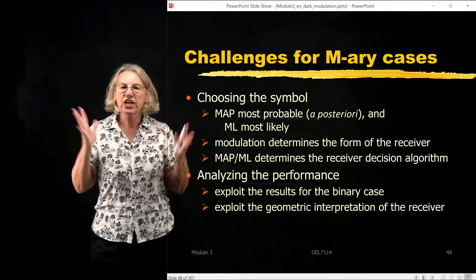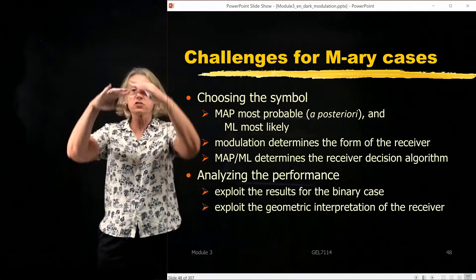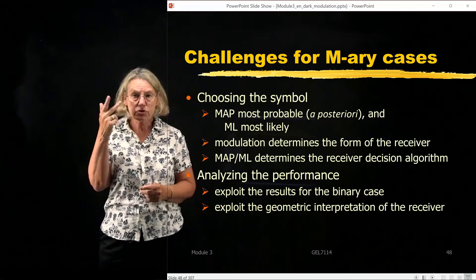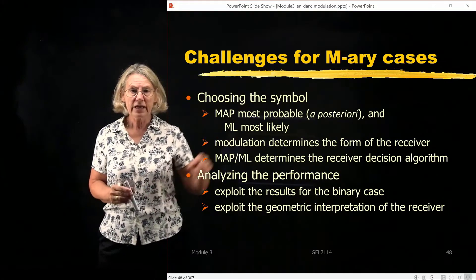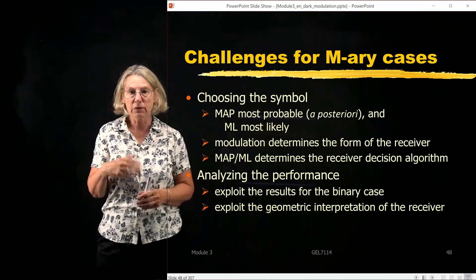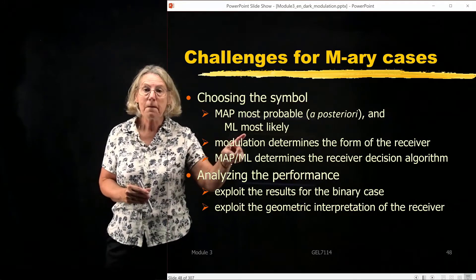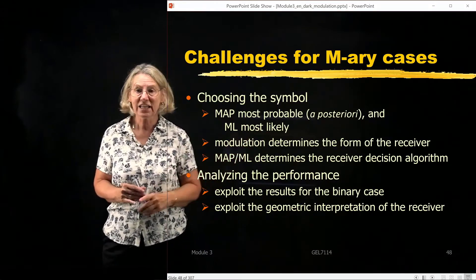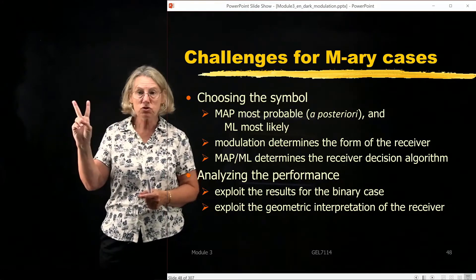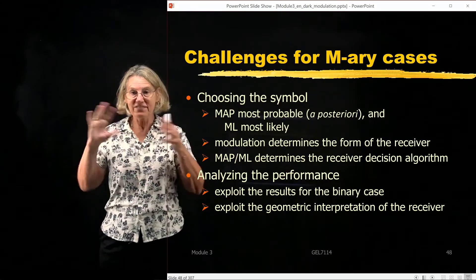What are the challenges when you use the M-ary space? We have to choose the symbol — there are many symbols, not just two. We have two strategies: we can look for the most probable symbol, which means maximizing the a posteriori probability, or we could look for the most likely symbol by maximizing the likelihood. Those two strategies come about in the receiver.